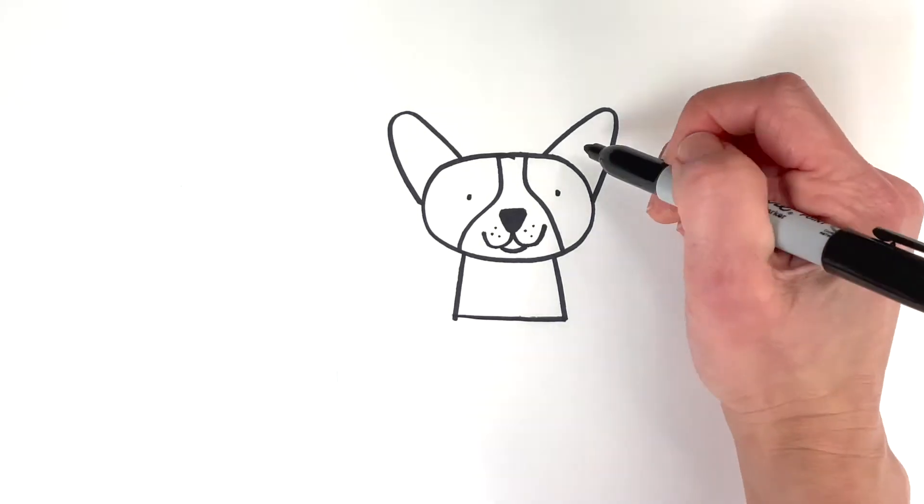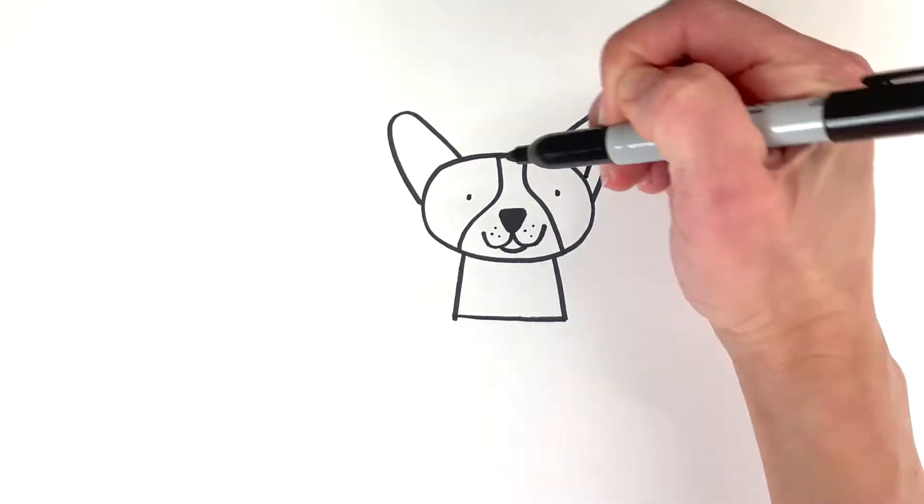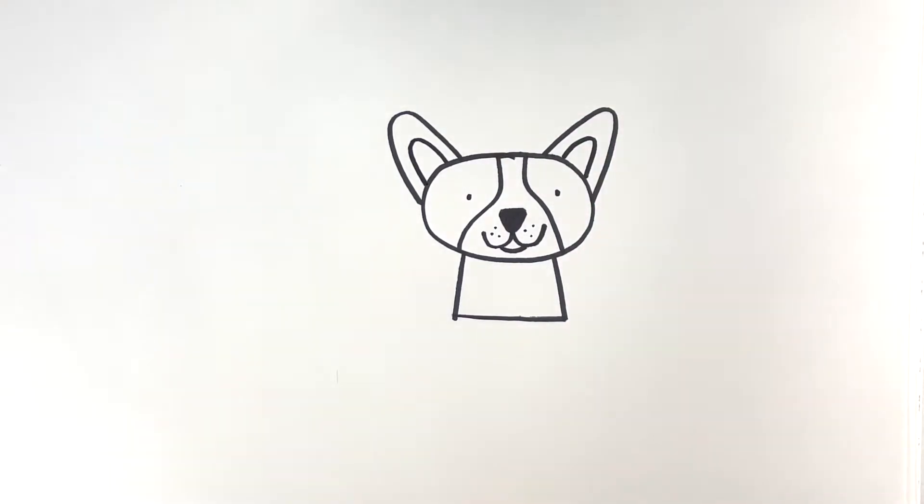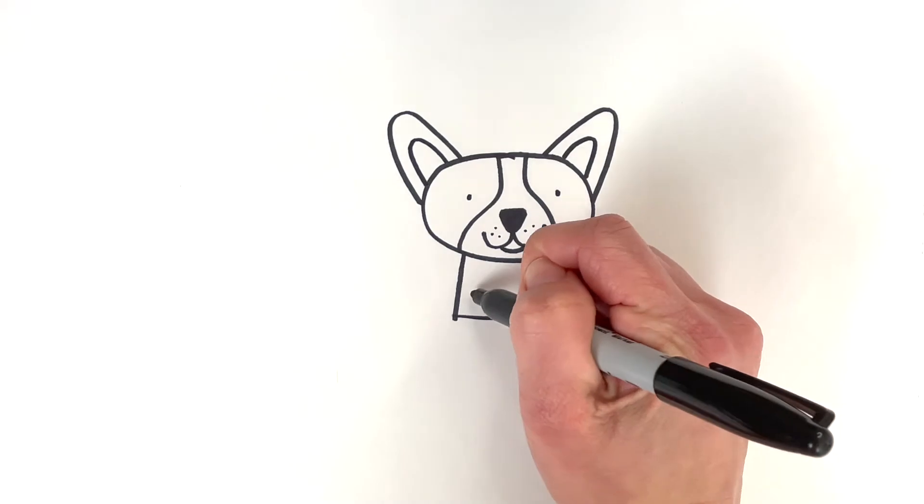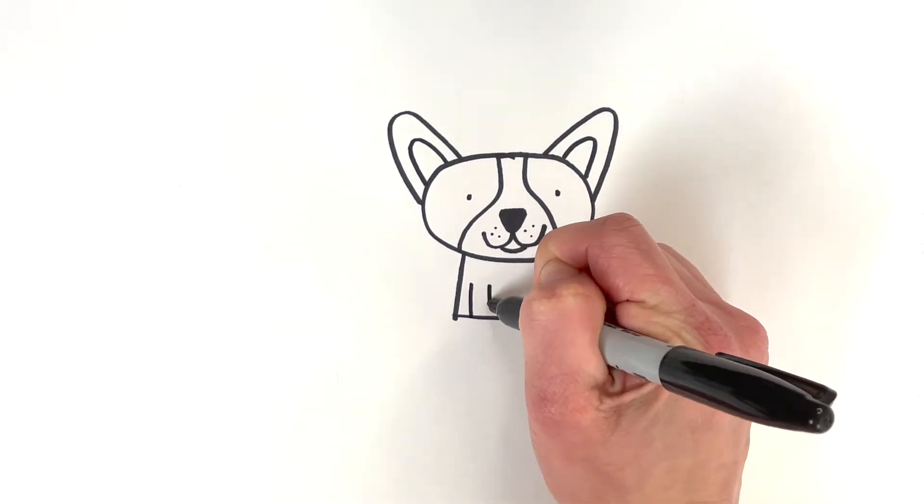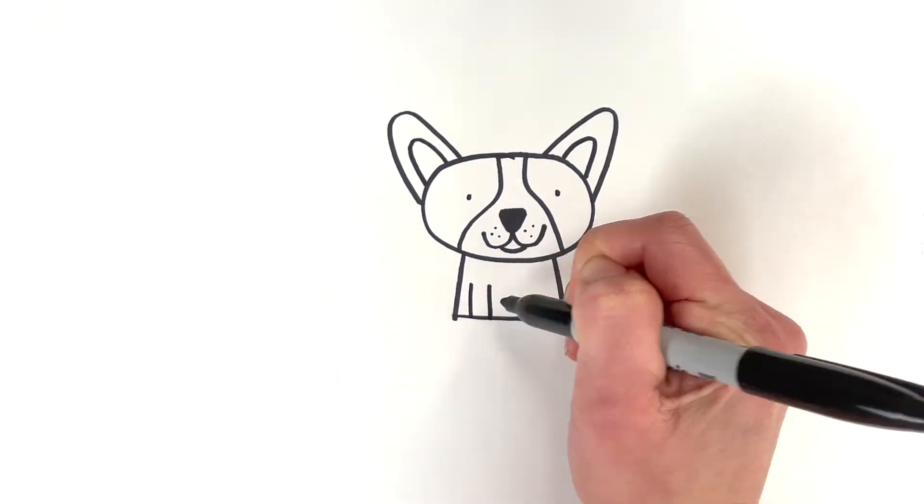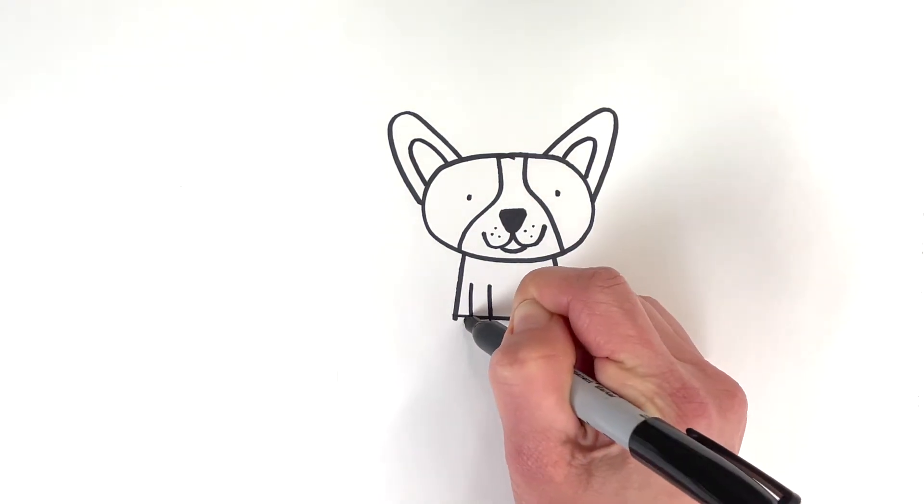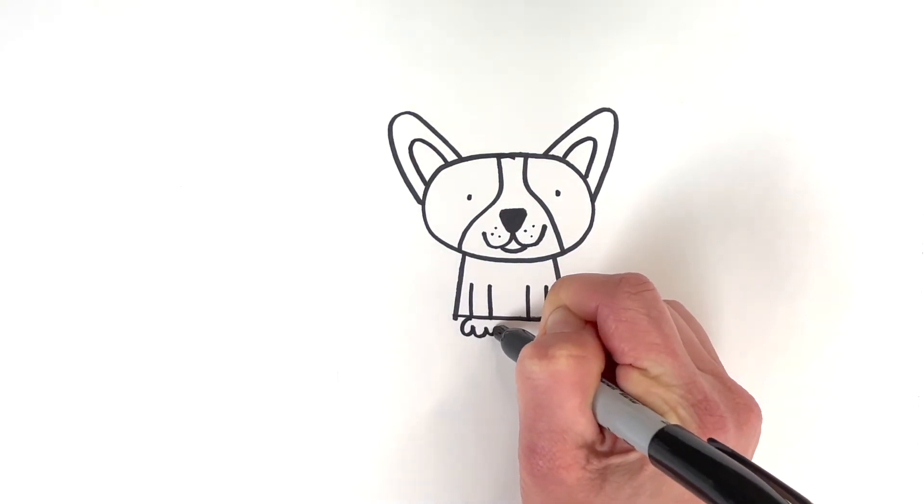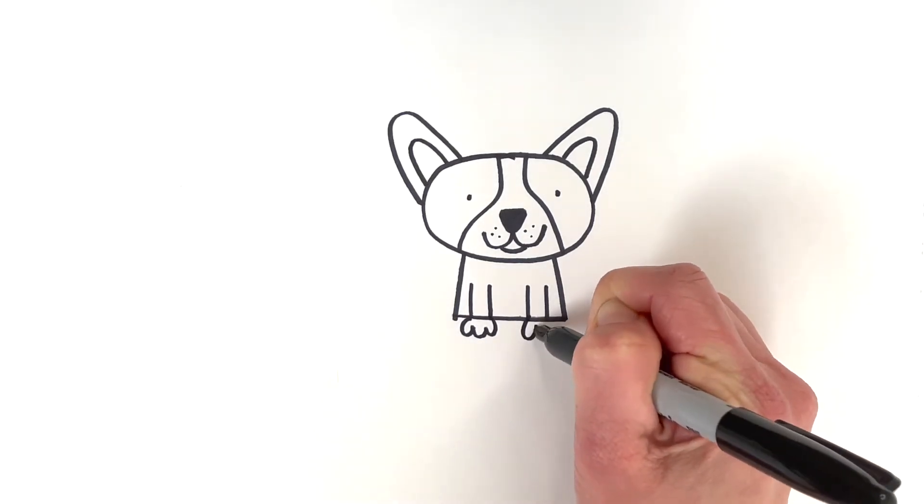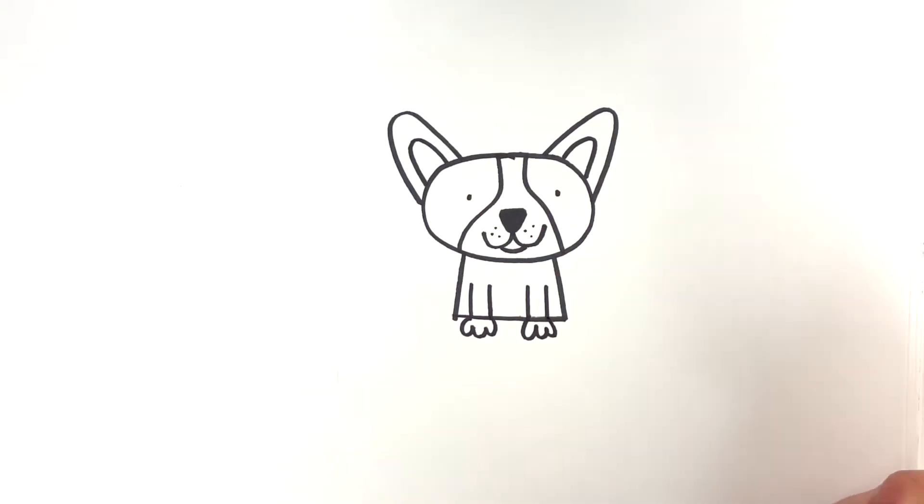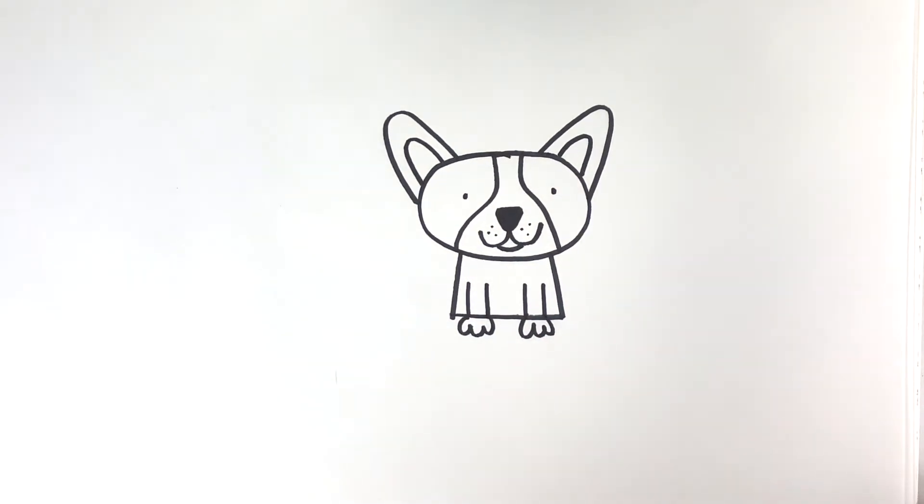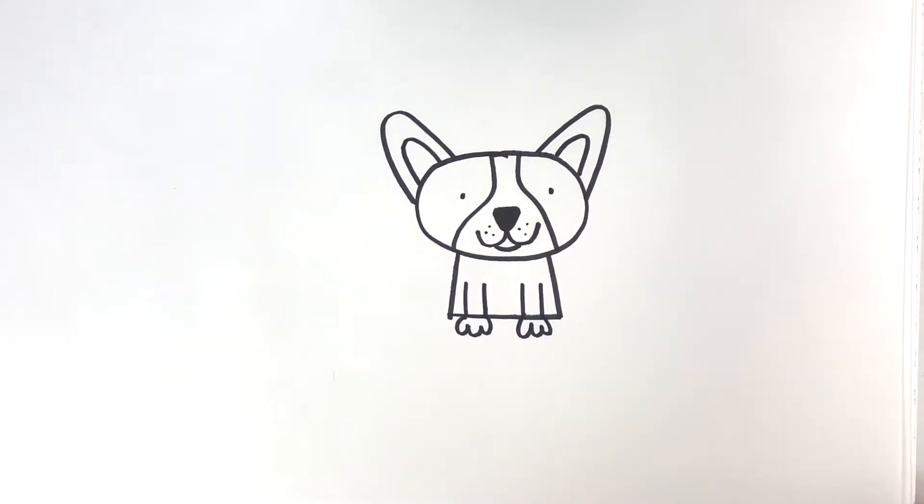Okay, how about the inner part of the ear? And some arms here. So I'll do like number 11 here. Number 11 here. And then the little paw. It's like the letter W or three U's. Oh, he's so cute!